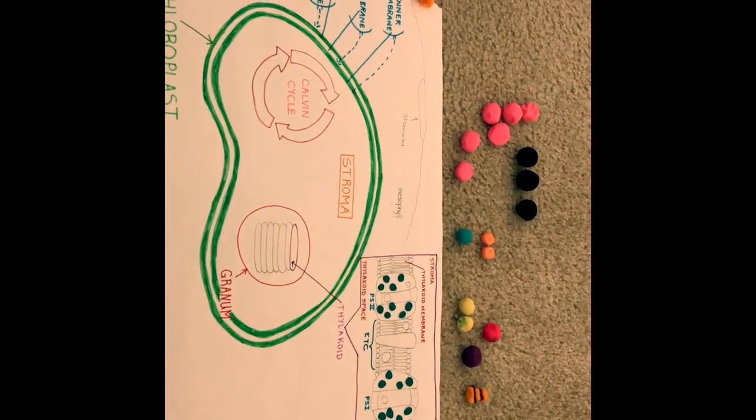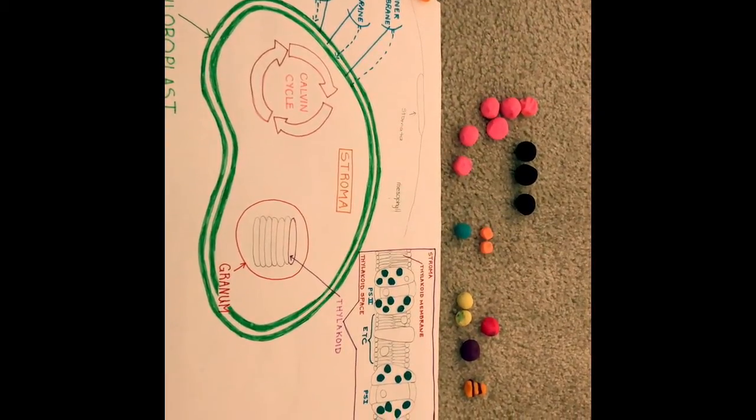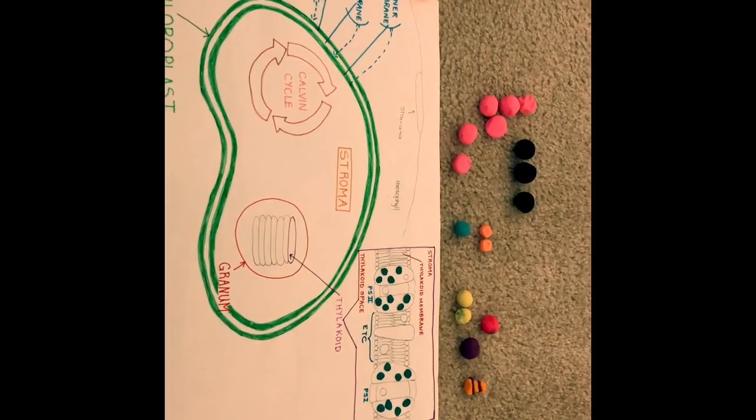The chloroplasts are found mainly in the cells of the mesophyll, which is the tissue of the interior of the leaves.